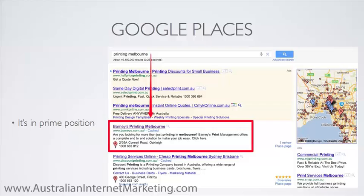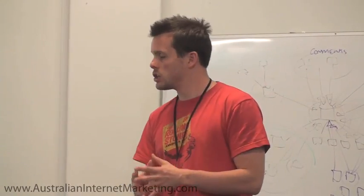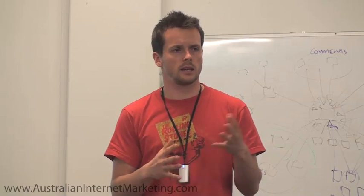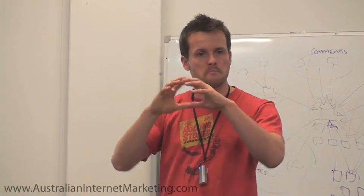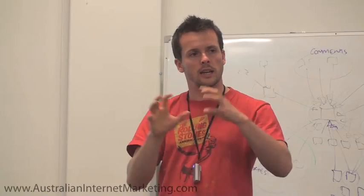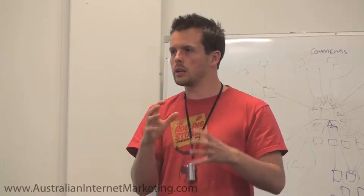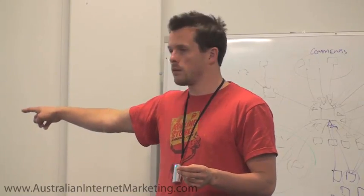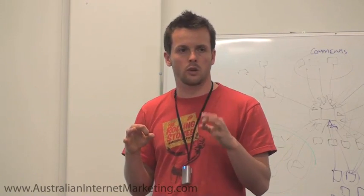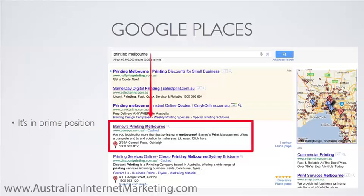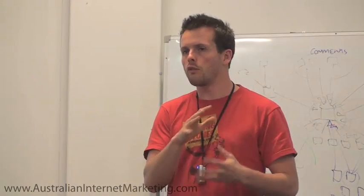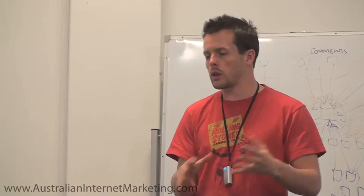There's a good example here — our client for 'Printing Melbourne'. It is changing somewhat; they keep mixing it up, they're obviously still testing it — Google are avid testers. You can see on the right hand side they've got a map. Sometimes that map is embedded into the actual content. There's no real set way they're doing it. Sometimes you'll find Google Places listings, and the way you can tell it's a Places listing as opposed to a normal listing is the little A and B pin underneath the search result.